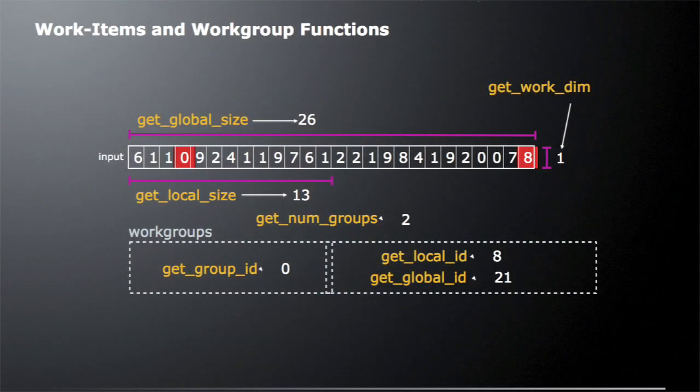Let's look at some of the work item and work group functions. Given that input buffer, one function you might be interested in is getWorkDimension — that's going to tell us whether we're in a 1D, 2D, or 3D space. In this case we just have a one-dimensional vector, so when we call getWorkDimension we're going to get one. The next thing we might call is getGlobalSize — in this case we're going to get 26, because there are 26 work items in our global size.